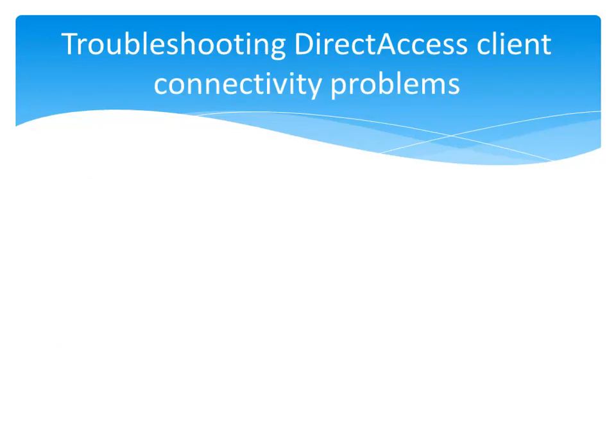The next part of this document has you troubleshoot specific types of Direct Access connectivity problems. The idea is to break the configuration of the working Direct Access test lab in a very specific way, have you experience the problem from the Direct Access client, and then walk you through the steps to determine the root cause of the problem.